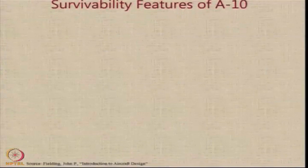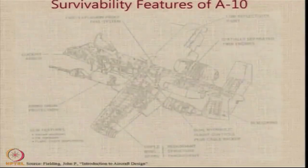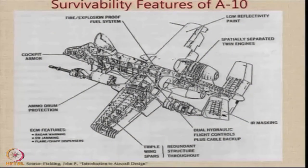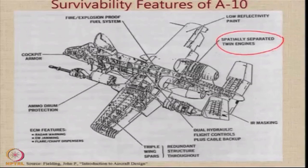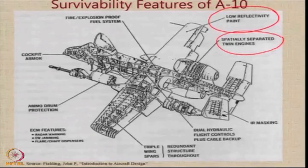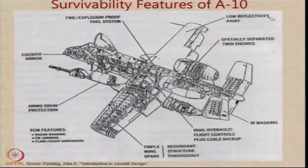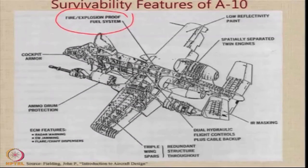Let us look at the survivability features of the A-10, one of the most advanced ground attack aircraft. This aircraft has many features that increase its survivability. First, the two engines provide redundancy and are spatially separated so that a single enemy strike does not take out both engines. They are painted with low-reflectivity paint so that they are less visible. The aircraft has a fire and explosion-proof fuel system because it is expected to be hit by ground artillery.